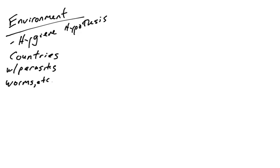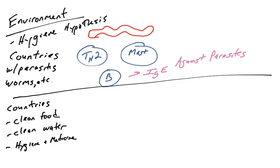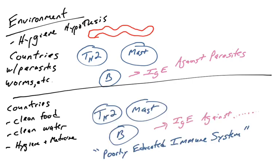A lot of this hypothesis is based on the fact that countries where parasitic infections are common, in those areas, type 1 hypersensitivities are very rare. In those environments, children are exposed to parasitic worms at a young age, and their B cells and their Th2 cells and their mast cells are involved in generating IgE against parasites, which is the normal function of these cells. Whereas in countries that have fewer parasitic infections because of clean drinking water, clean food, and access to hygiene and medicine, in those countries where parasitic infections are very rare, that's where you tend to find more and more hypersensitivities, specifically type 1 hypersensitivities.